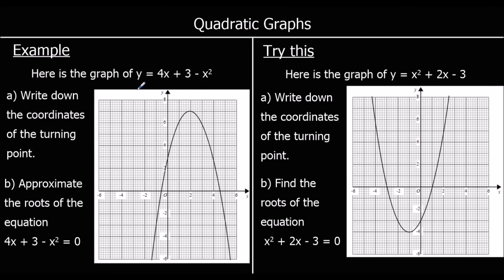The first question shows the graph of 4x + 3 - x². We've got a negative x squared shape, and we want to know the coordinates of the turning point. The turning point is where it stops going up and starts going down, or stops going down and starts going up. The turning point of this graph is at (2, 7).